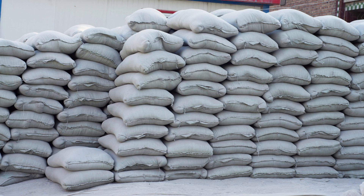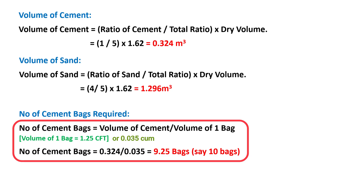Finally, to calculate the required number of cement bags, divide the volume of cement by the volume of one bag. Cement bags are usually sold in 50 kg bags, with a volume of 0.035 cubic meters each. Number of bags = 0.324 / 0.035 = 9.25 bags, which rounds up to 10 bags of cement.